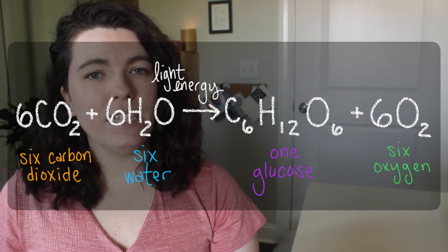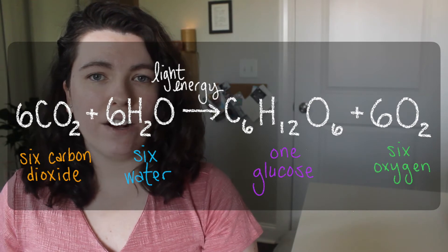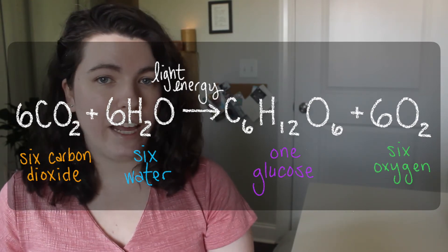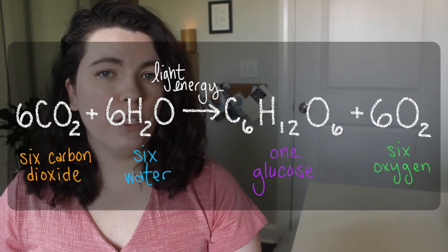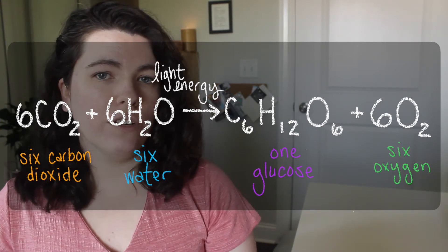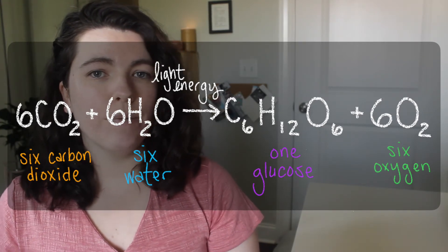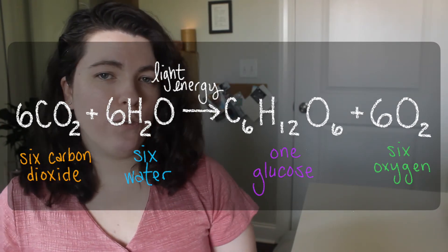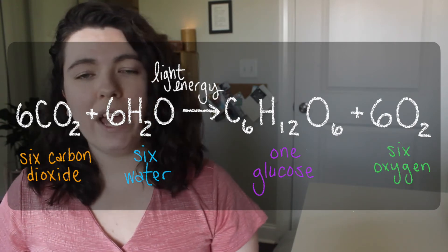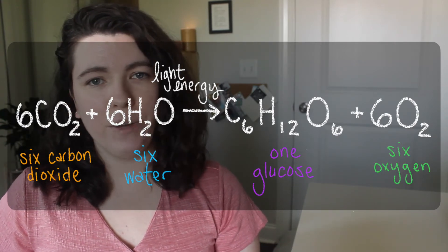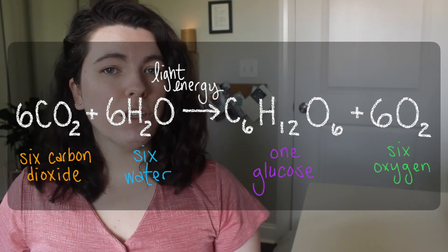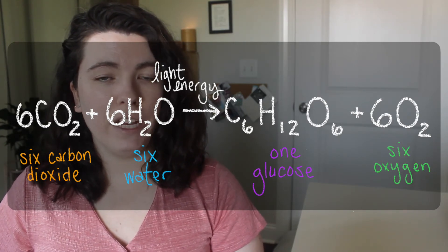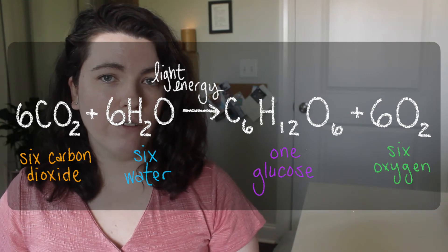The arrow in the equation indicates that when six molecules of carbon dioxide are combined with six molecules of water in the presence of light energy, they rearrange to become one molecule of glucose and six molecules of oxygen. You should be familiar with this type of notation for the GED test, but you don't have to memorize any chemical equations or formulas. It's worth noticing that in this equation there are the same number of each element on either side of the arrow.